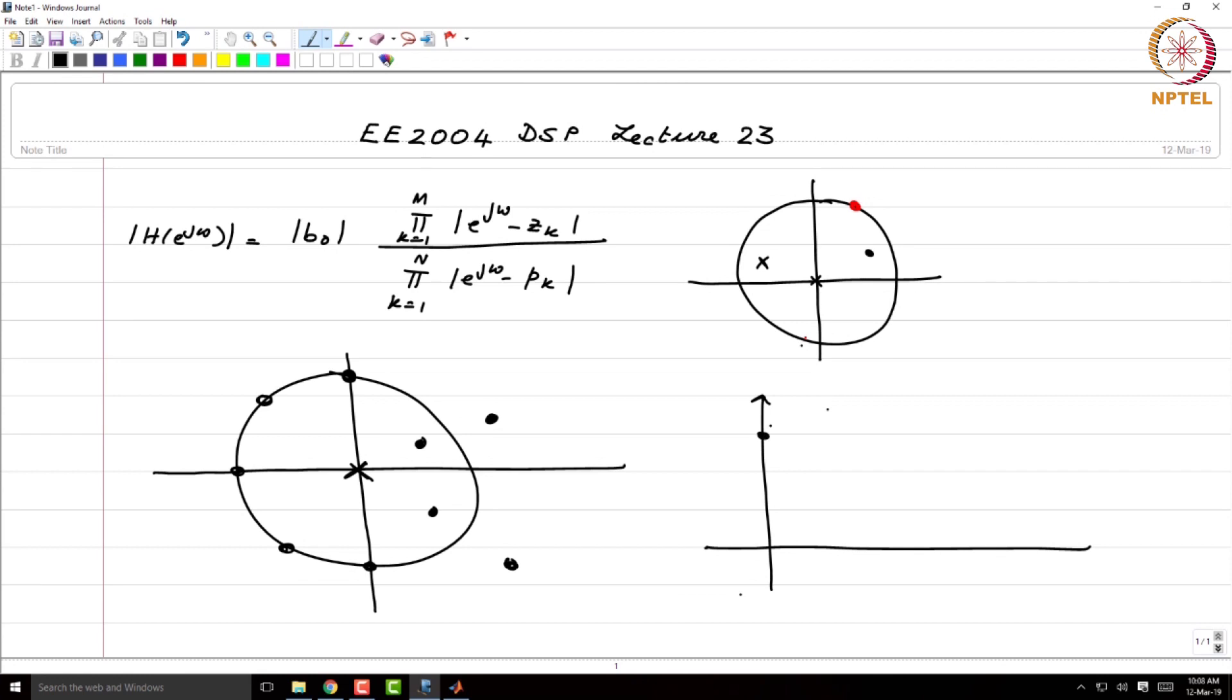And hence, if you are here, if the magnitude response has this particular value at omega equal to 0, when you go along the unit circle, what will happen is, since you are approaching these two zeros, the magnitude response will dip. And then when you go past this pair, when you go just past, the magnitude response will again begin to rise. And hence the response will be something like this.